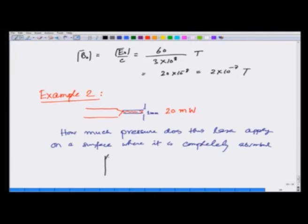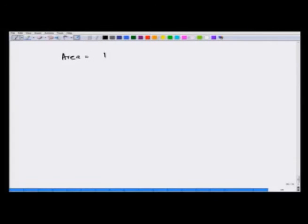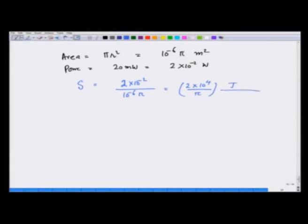So what we are seeing is I have a surface on which this laser beam which is coming gets absorbed completely. The pressure comes because of the momentum transferred per unit area per unit time, which is equal to pressure. We have area is equal to pi r squared, which is 10^-6 pi meter squared. We have power which is equal to 20 milliwatts or 2 times 10^-2 watts. And therefore, the S or the Poynting vector is going to be 2 times 10^-2 divided by 10^-6 pi, which is 2 times 10^4 over pi joules per second meter squared.